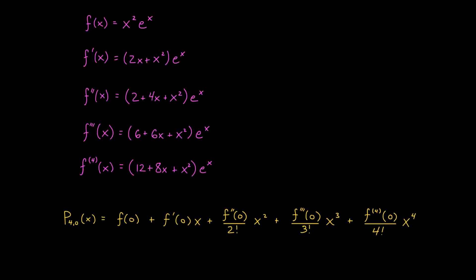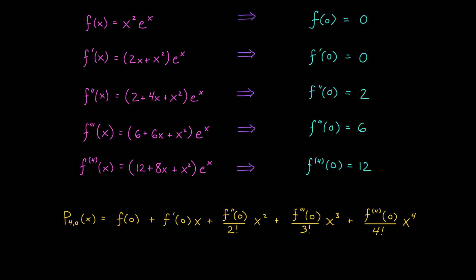I wouldn't make you sit through another three applications of the product rule, so I went ahead and computed these derivatives for us. It was painful, but these are the derivatives we're looking for. We have to evaluate these things at zero. If you plug in x equals zero, you should get values zero, zero, two, six, and twelve.